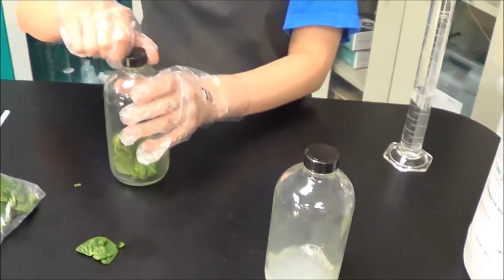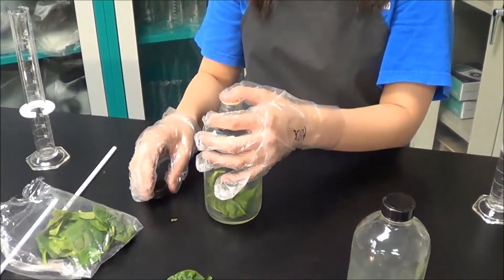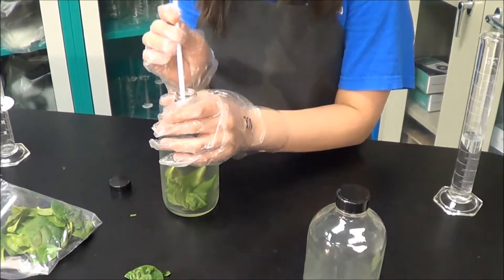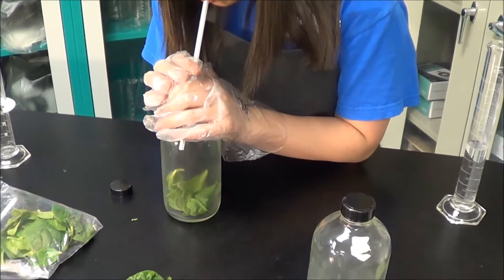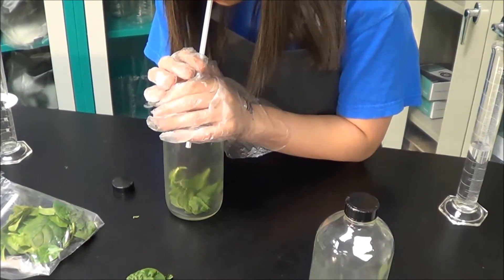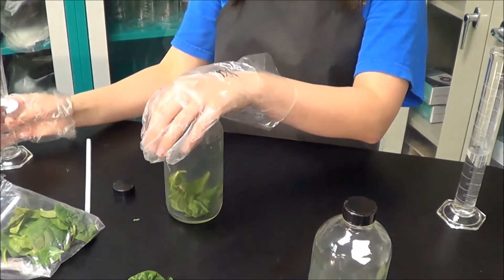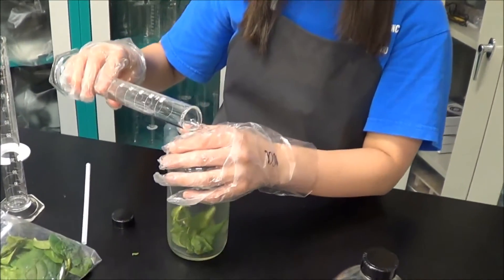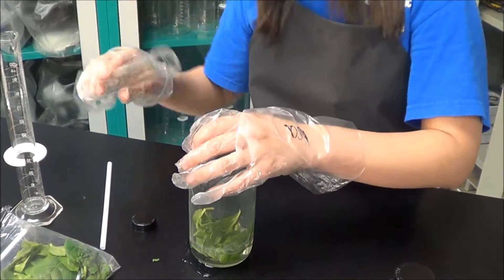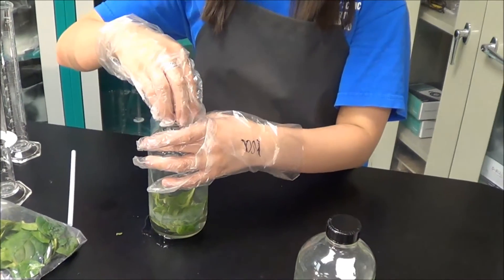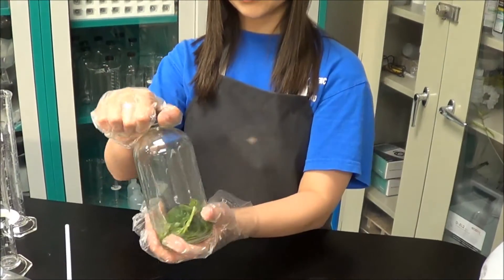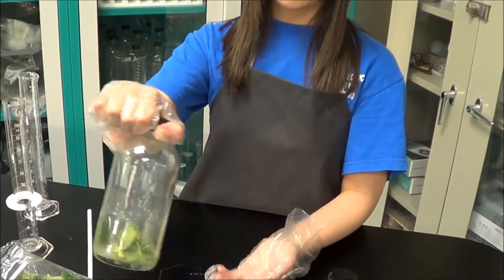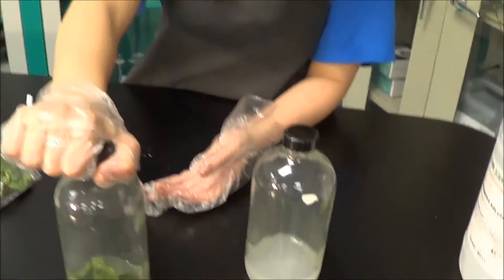And then you take the second bottle and you open it. And then you blow again for 30 seconds. And on this one you're going to pour the other 15 milliliters of limestone into the bottle. And then once you put the 15 milliliters inside the one with the spinach, you shake it. And then you're done.